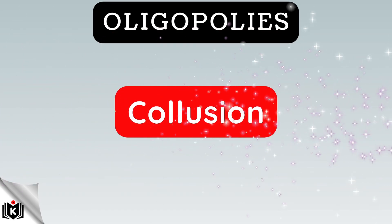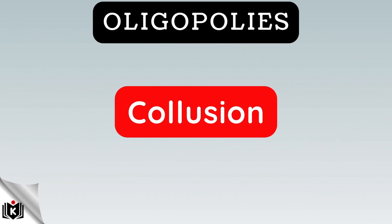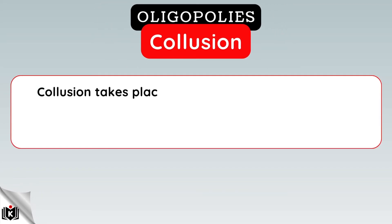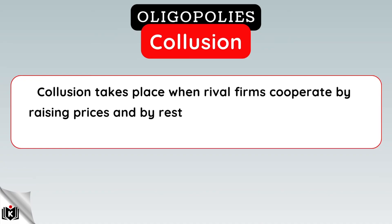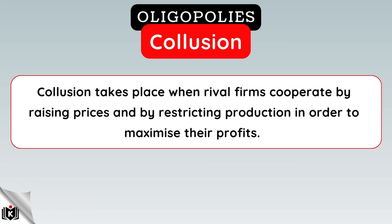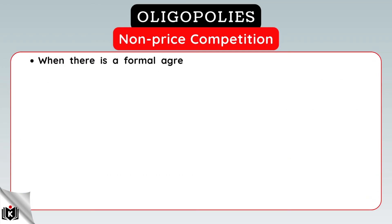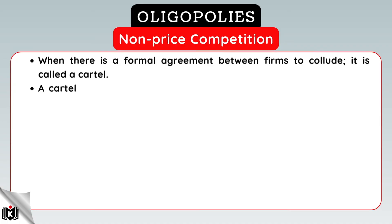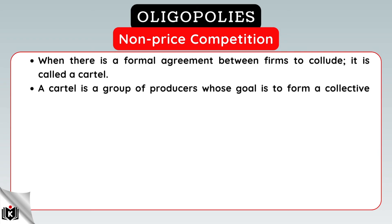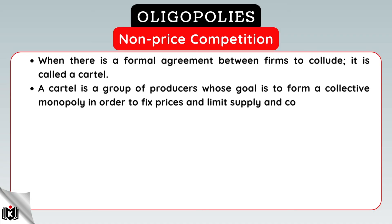An oligopoly is sometimes characterized by some form of collusion. Collusion takes place when rival firms cooperate by raising prices and by restricting production in order to maximize their profits. When there is a formal agreement between firms to collude, it is called a cartel. A cartel is a group of producers whose goal is to form a collective monopoly in order to fix prices and limit supply and competition.